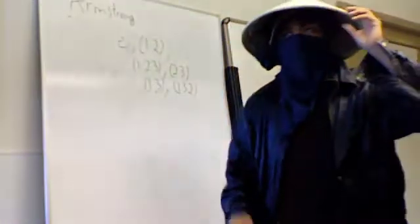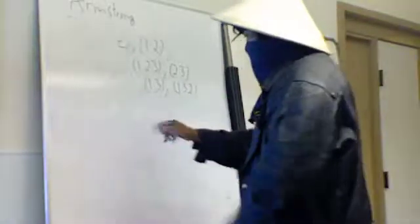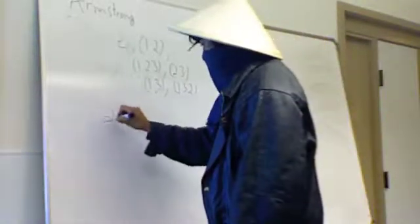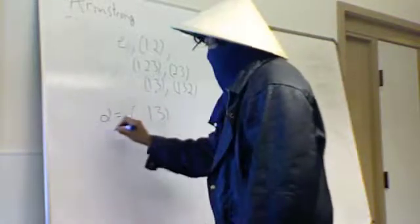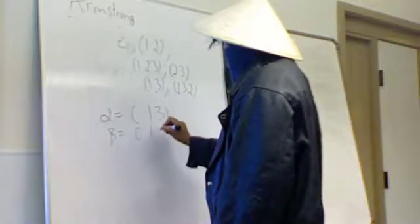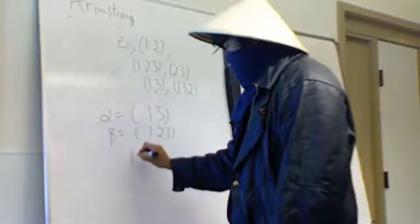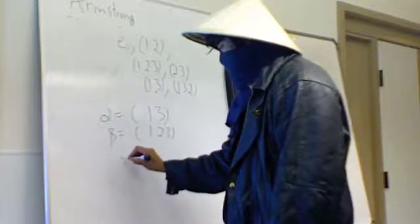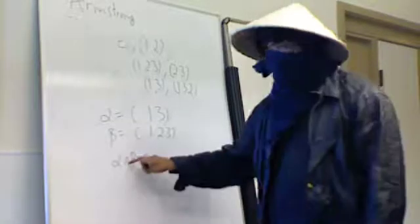Okay, so now let's consider if we have two permutations and wanted to compose them. So let alpha be equal to 1-3, and beta be equal to 1-2-3. Then first we perform beta and then compose it with alpha. What does this equal to? This is operation composition.